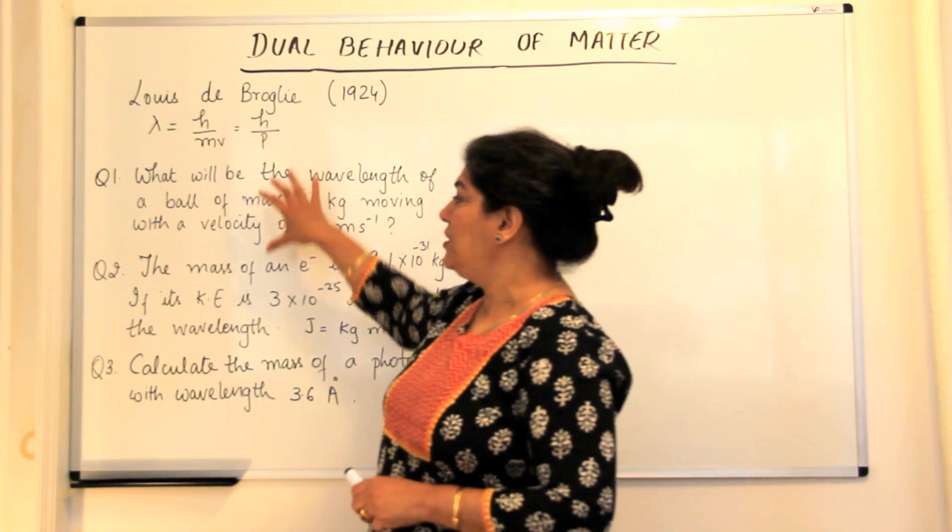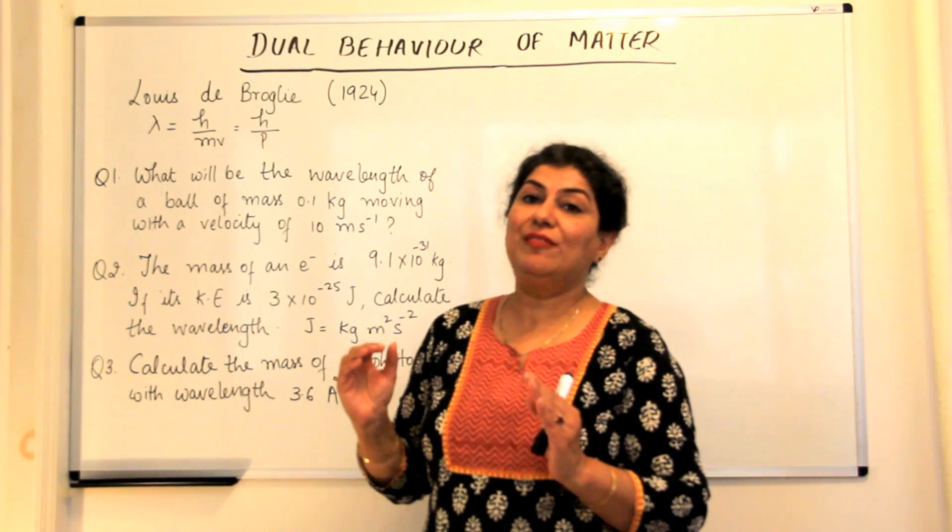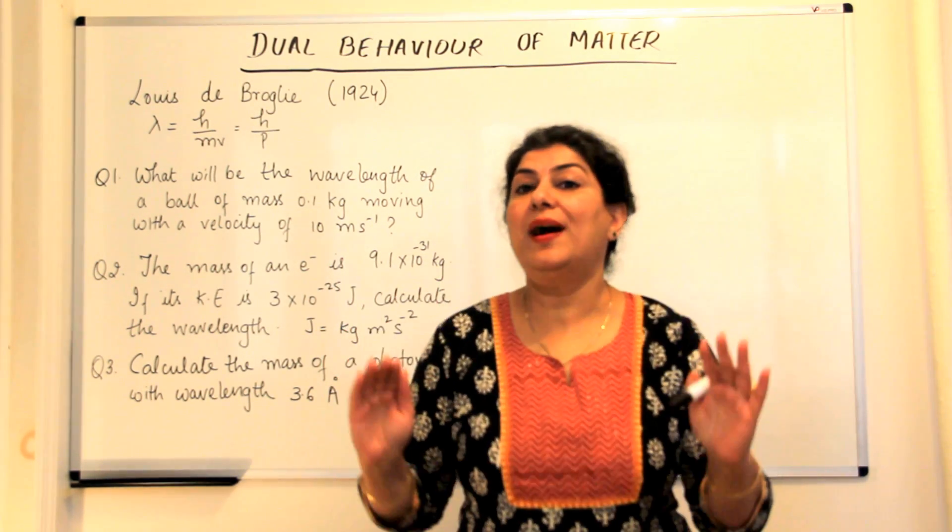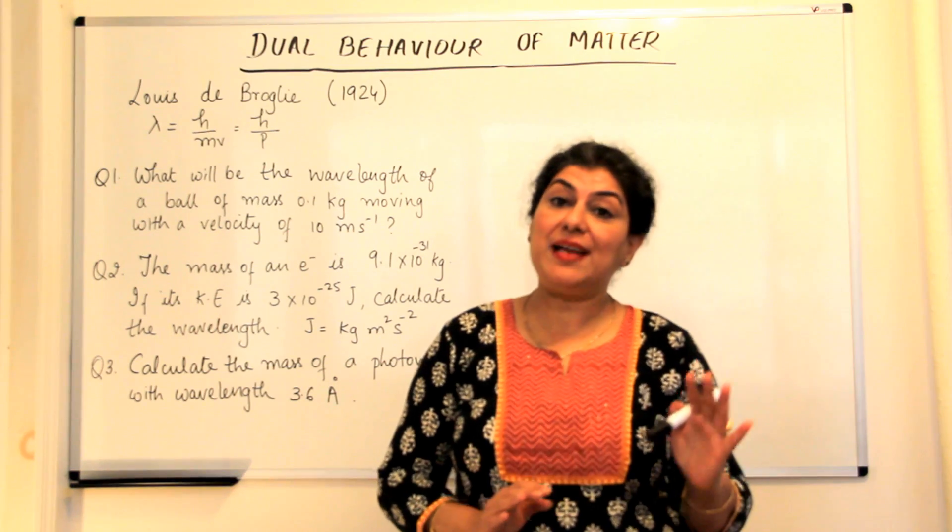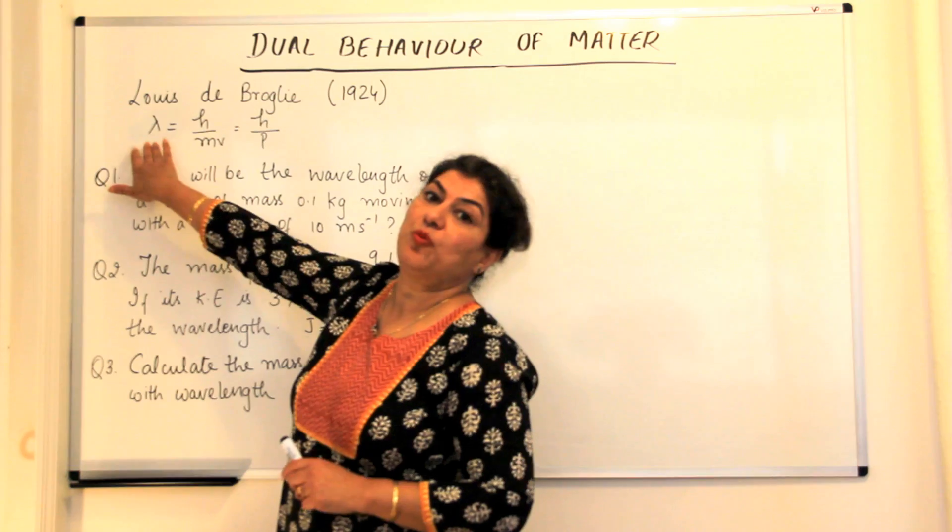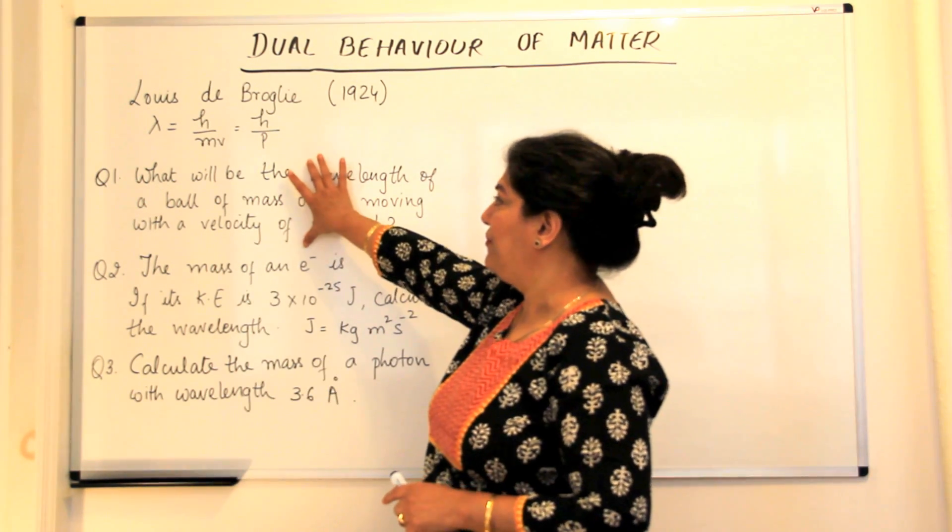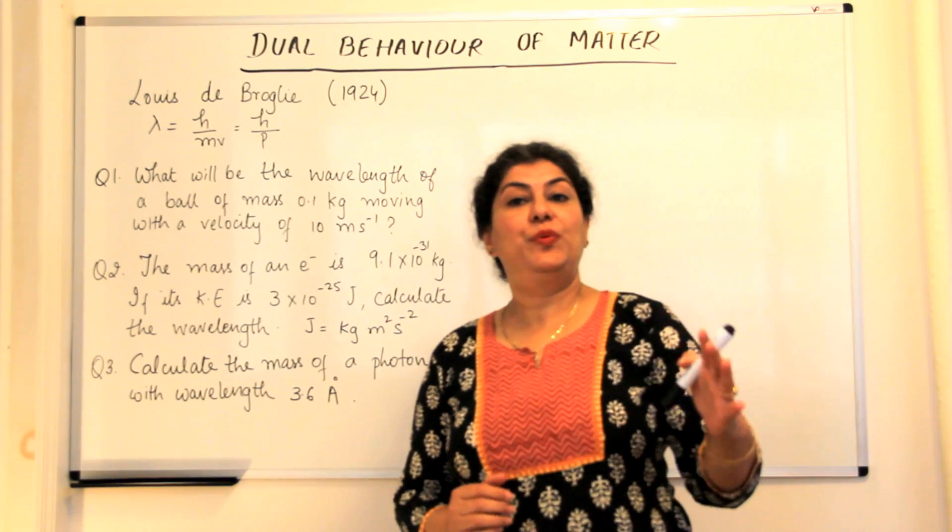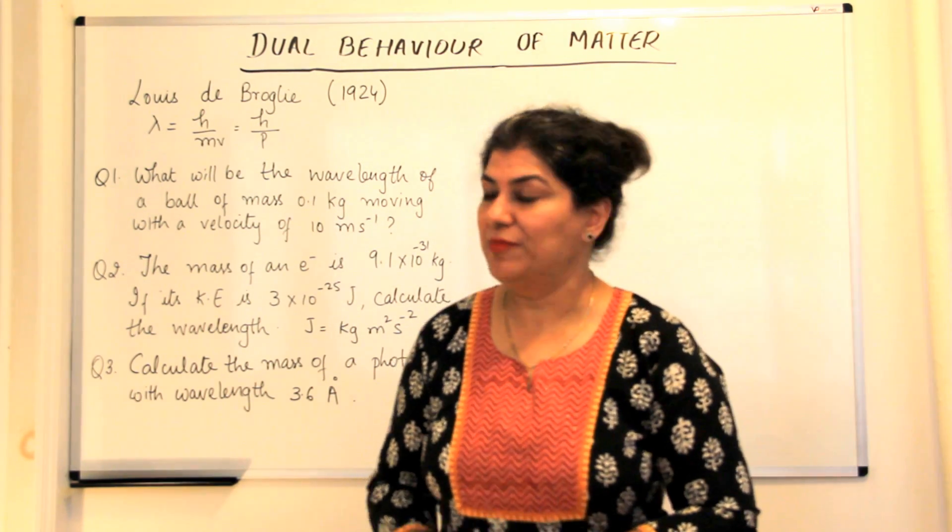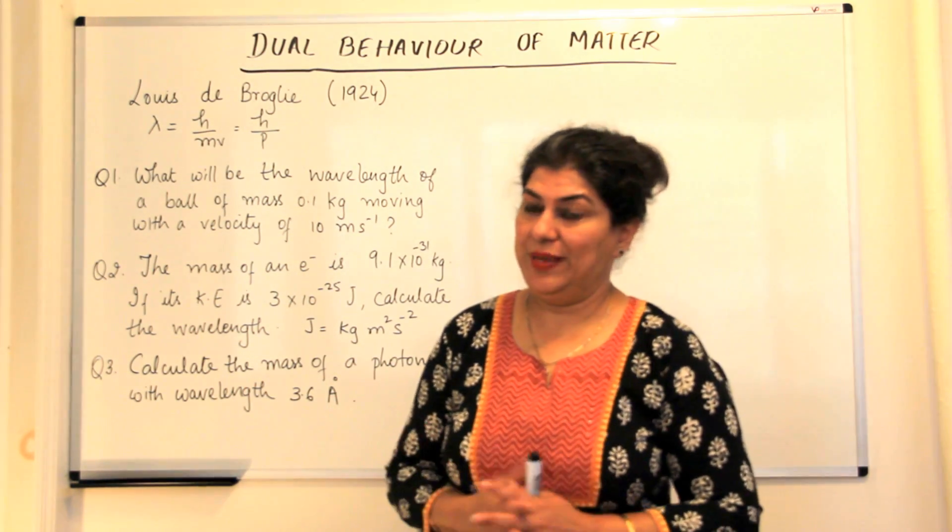Now I have chosen these three questions and these numericals - when we solve them it makes it clear why the wave nature of matter could not be identified because of their large masses and due to the very small wavelengths. So in this video I'll solve the first numerical problem and in the next video we'll solve the next two numerical problems and we'll compare the wavelengths obtained in the three questions.